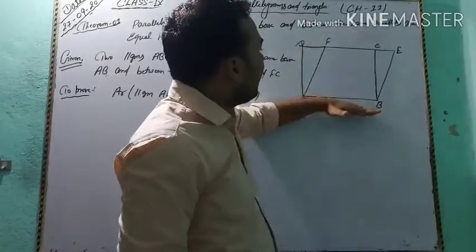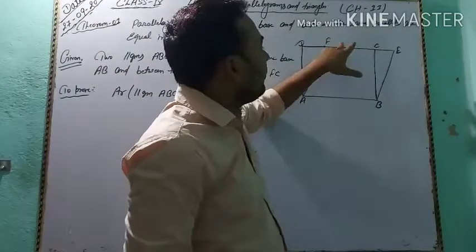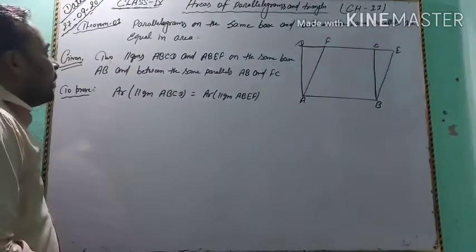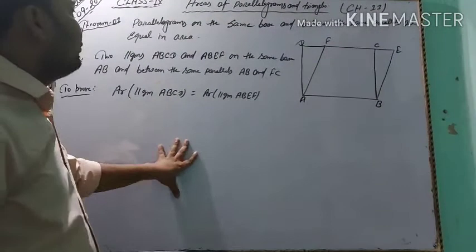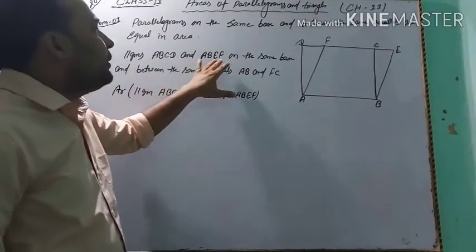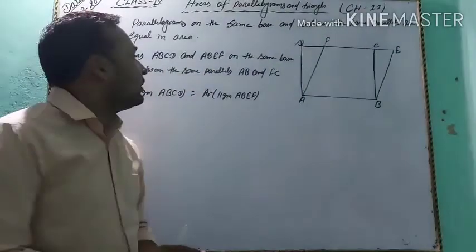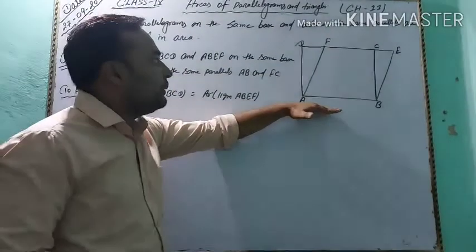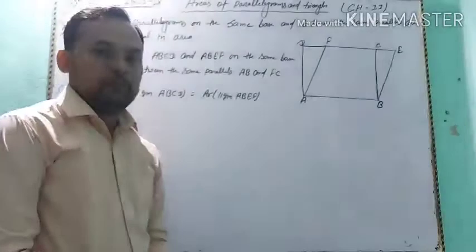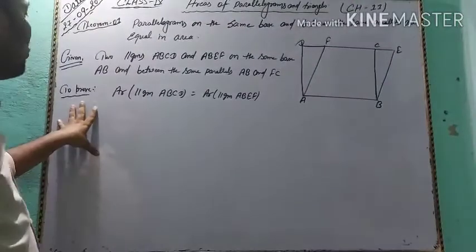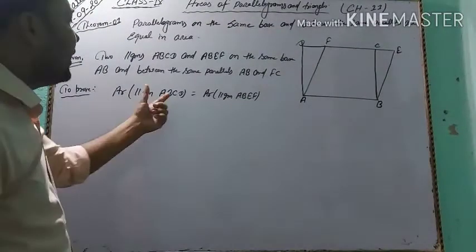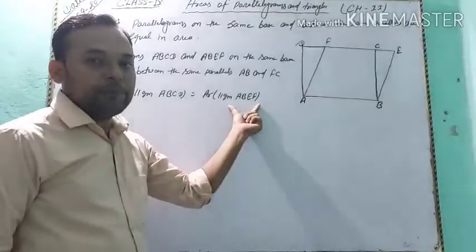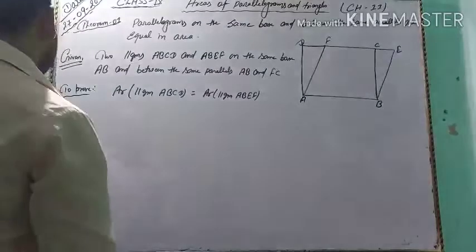And between the same parallels AB and DE. Given: two parallelograms ABCD and ABEF on the same base AB, and between the same parallels AB and FC. To prove: area of parallelogram ABCD is equal to area of parallelogram ABEF. So let's start the proof.